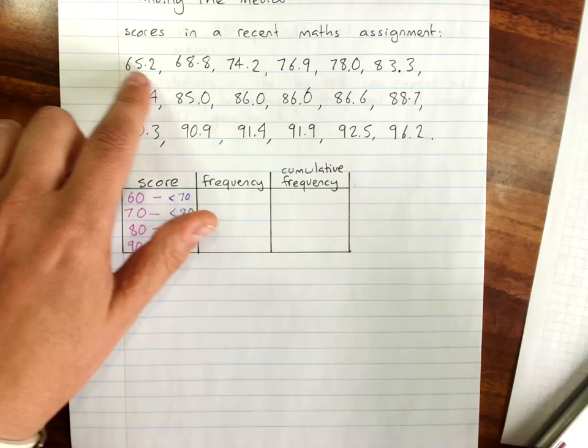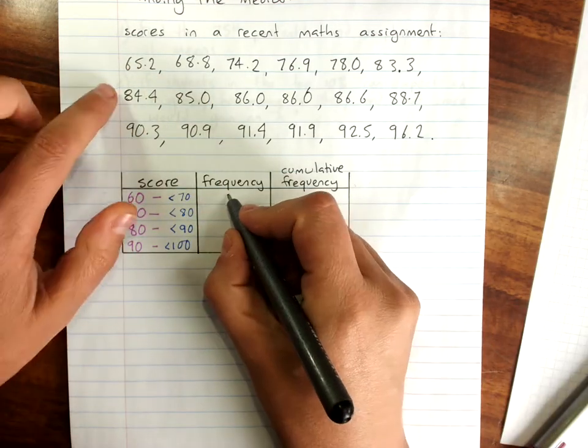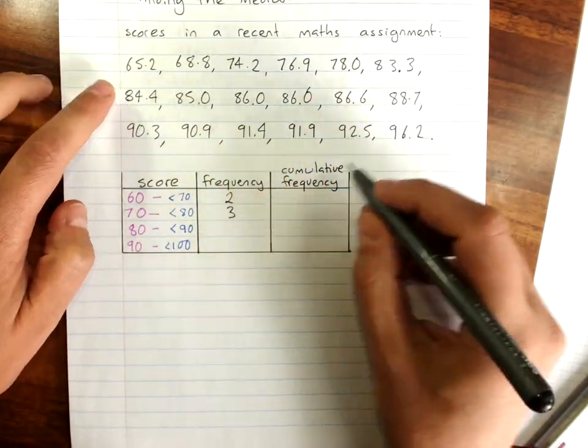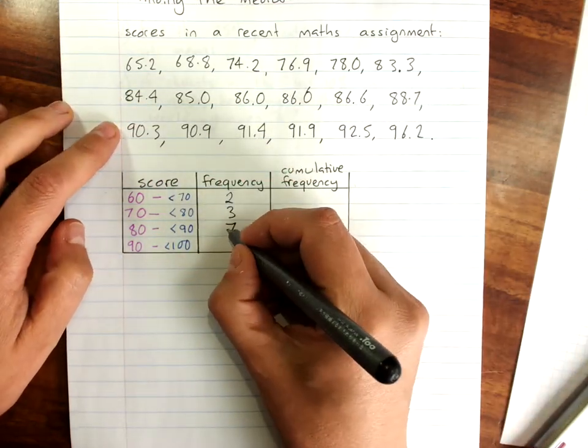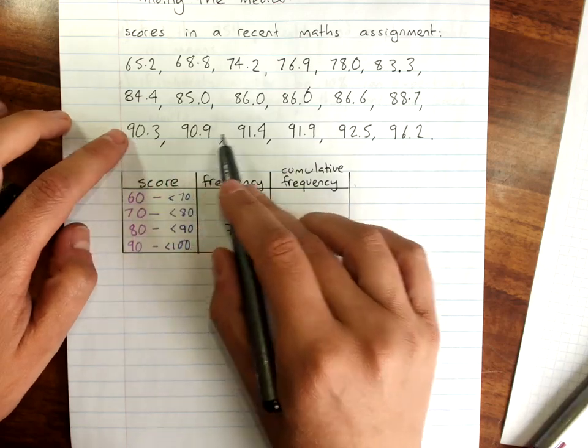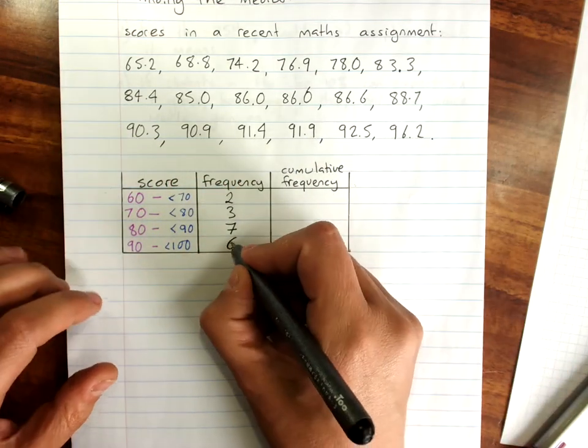So our frequency, there's two scores in the 60s, three scores in the 70s, seven scores in the 80s, six scores in the 90s.